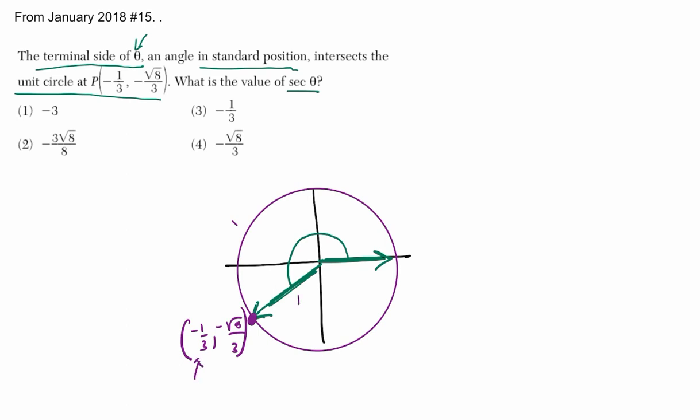You might know already (I'll just tell you if you don't) that the x value is equal to the cosine of the angle you're looking at, and the y value is the sine of the angle. So in this case, we want to know the secant.